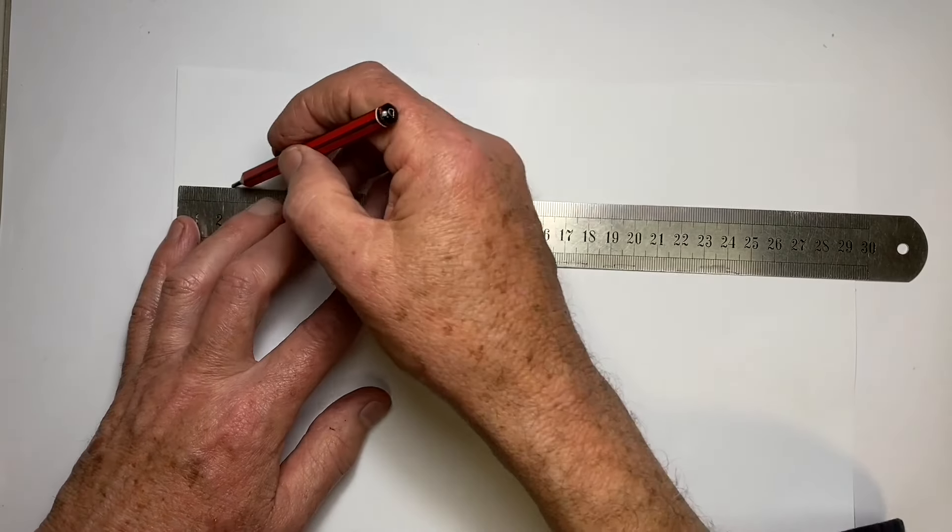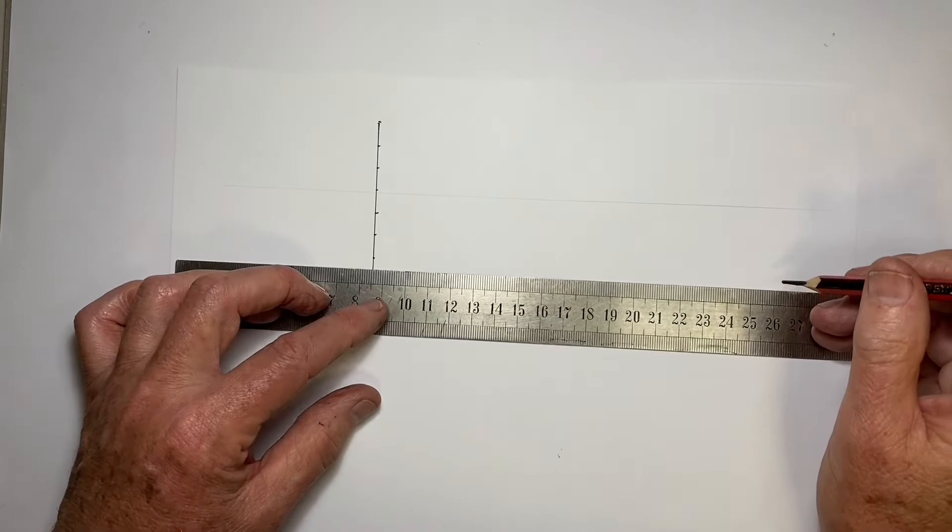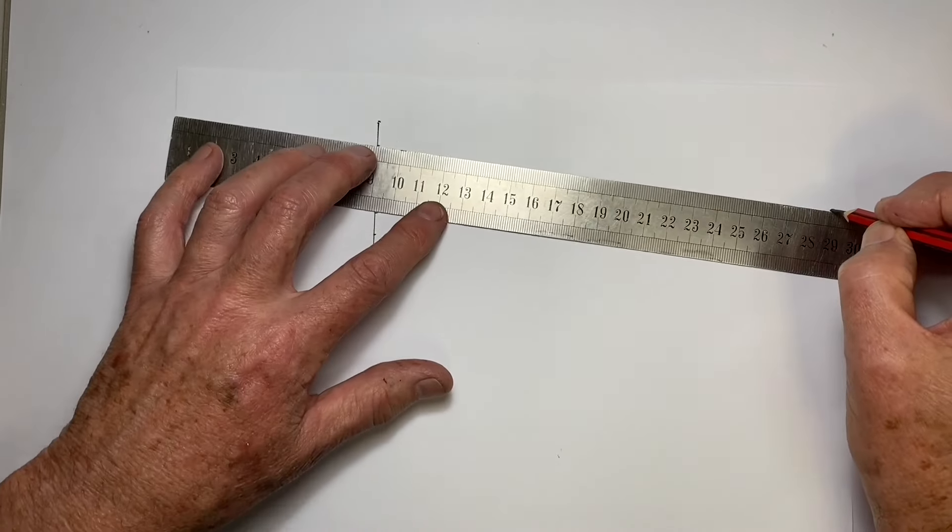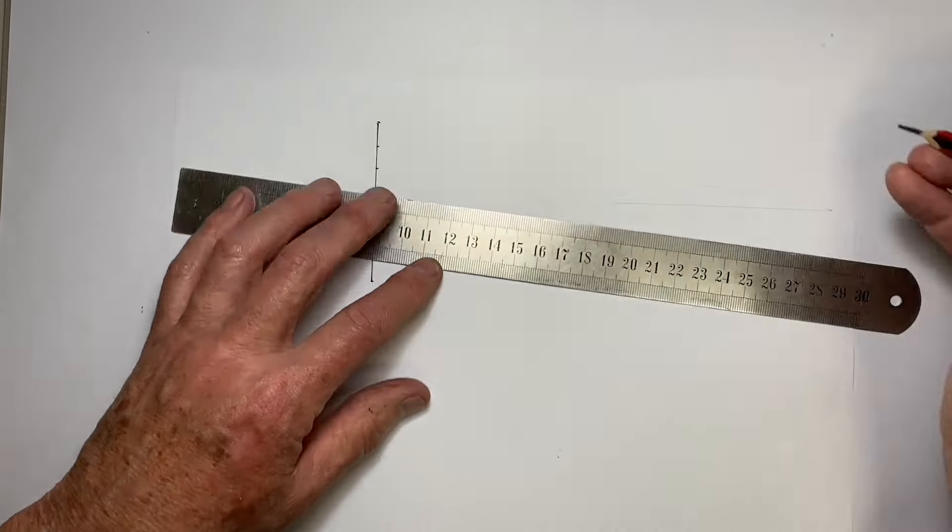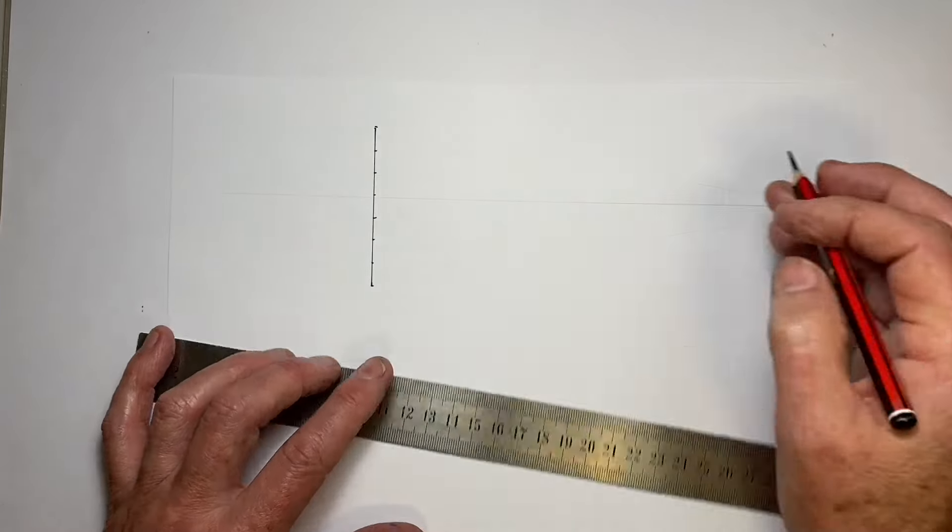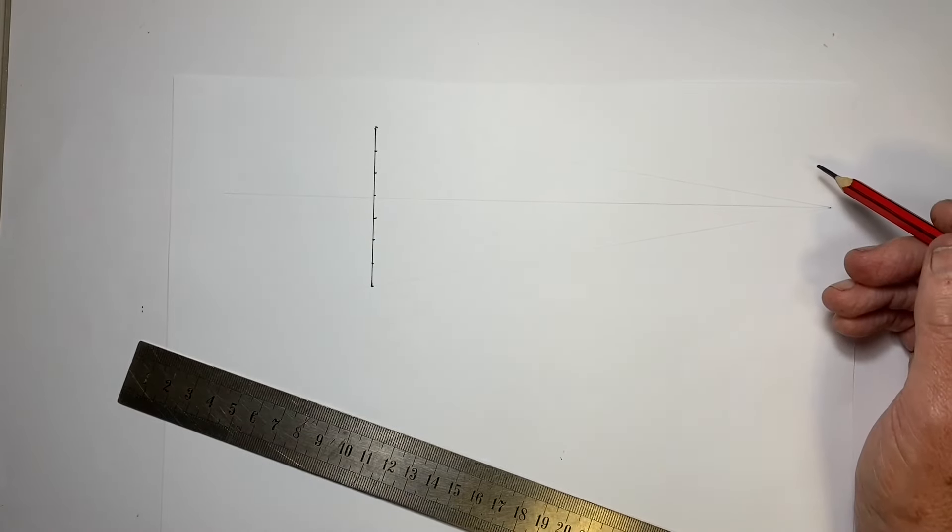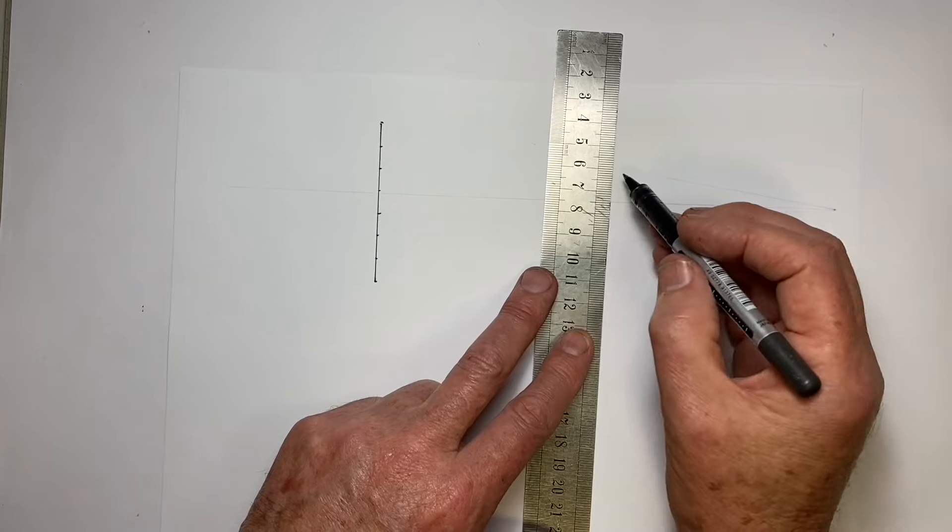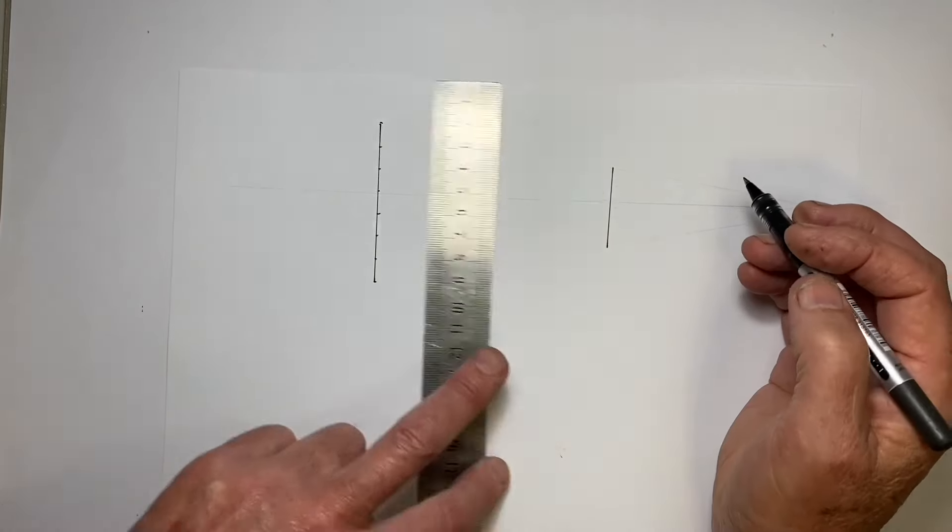Now I need to add an eye level and get a vanishing point. I'll just put the vanishing point there and I'm going to join this vanishing point not just with the top and bottom of the line for the wall, but also for the seven divisions.